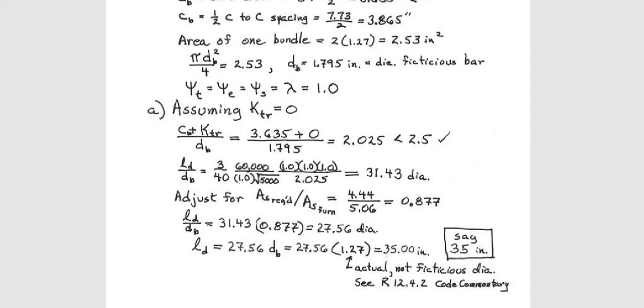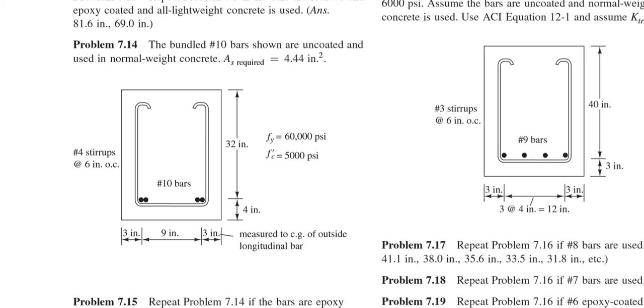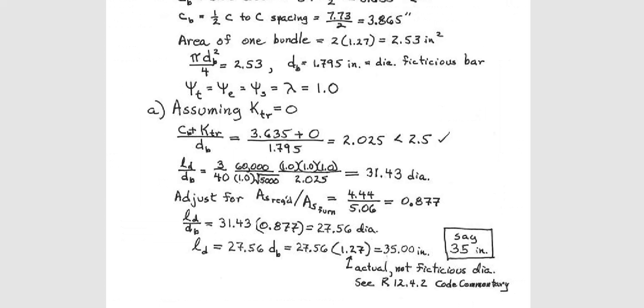So they provided 5.08 square inches. How we got it? Provided 5.08 because 4 number 10. So every bar is 1.27, every bar 1.27 times 4 it becomes, it should be this. And the required is 4.44, it was given in the problem. So there is a factor 0.877, they multiplied this with the calculation. It is 27.36 diameter. Then they moved this diameter here. And this diameter is actual diameter, it is not the fictitious. Fictitious is only in here, this is fictitious. So they wrote here dB, dB, so it might be confusing to you. So be careful. So this is fictitious.